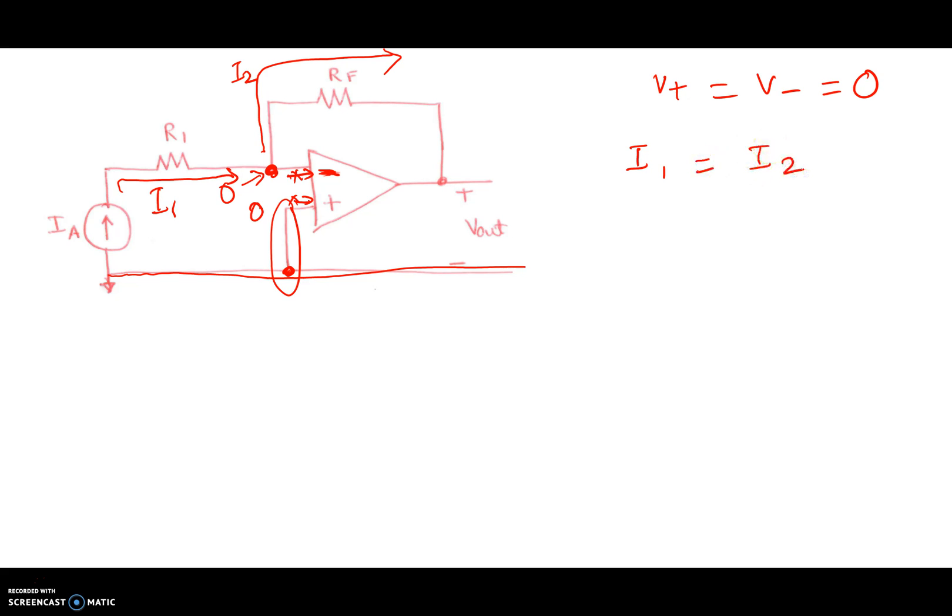Well, what's I2? I2 is the current flowing from this node, which is at zero volts, towards this output node, which is at V out, through a resistance of RF. So I2 is equal to zero minus V out divided by RF.